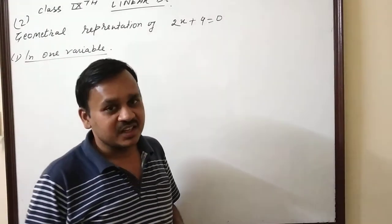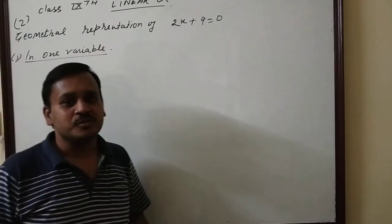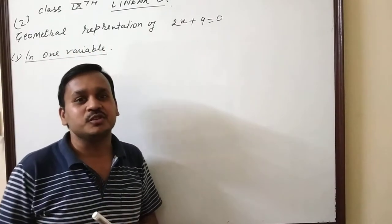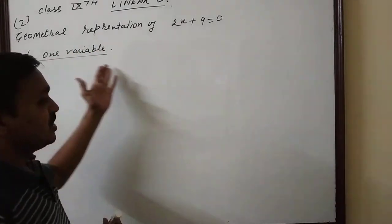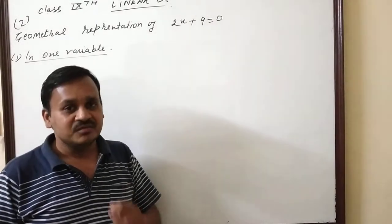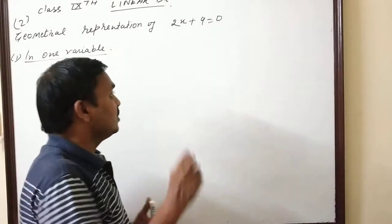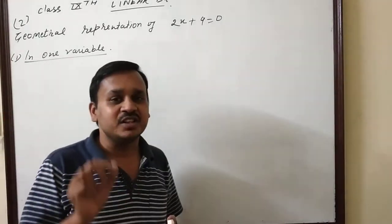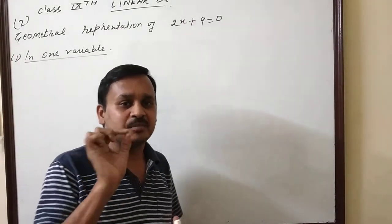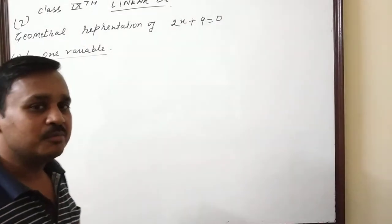The question is asking for the geometrical representation of 2x+9=0 in one variable or two variables. So one variable will be found. The representation of 2x+9=0 is a linear equation in one variable.